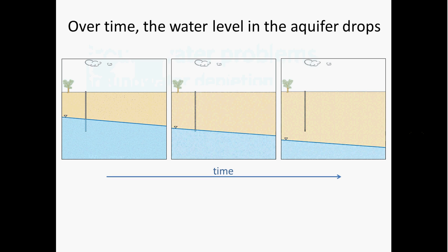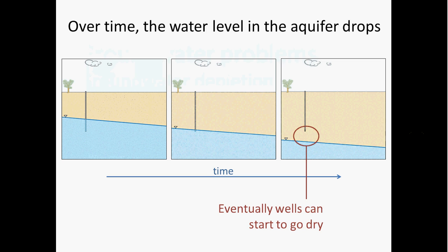This can cause a lot of problems, including causing wells to go dry, reduction of water in streams and lakes where those surface water bodies are fed by groundwater discharge, increased pumping costs because you have to pump the water further to get it up to the surface, and it can actually cause the land surface to subside, where water pressures are essentially helping to hold up the land surface.